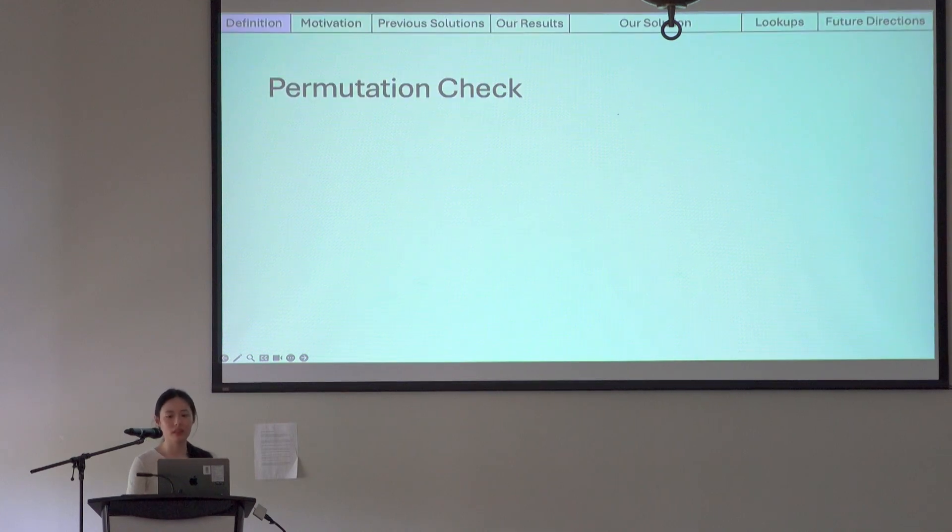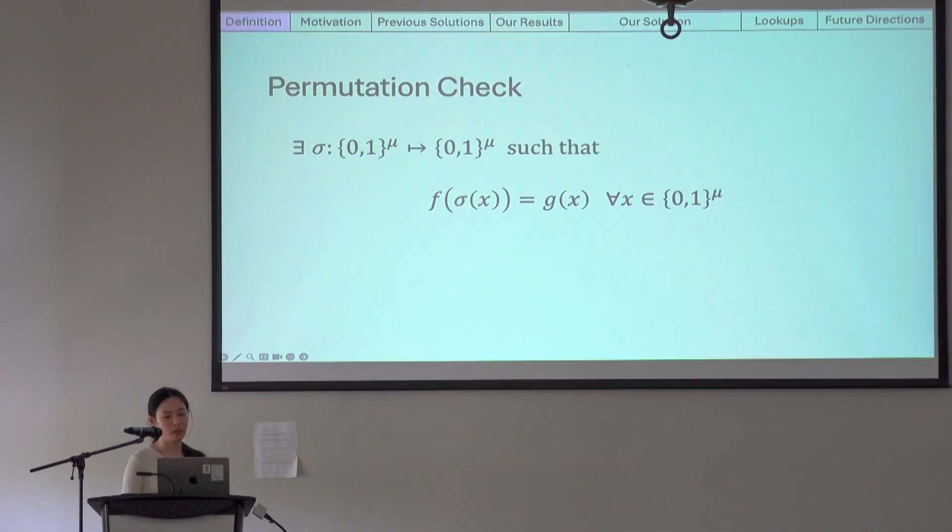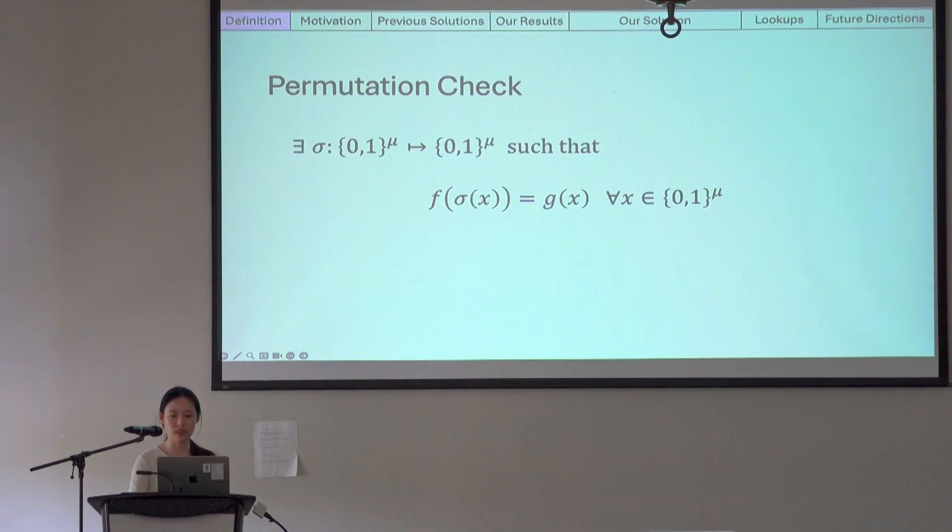Let's start by looking at the definition of permutation check. It states that given polynomials f and g, their outputs are permutations of each other if and only if there exists a polynomial sigma mapping between a Boolean hypercube of the same dimension such that f of sigma of x is equal to g of x over the Boolean hypercube.